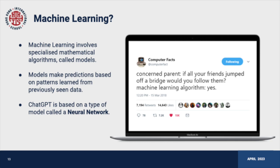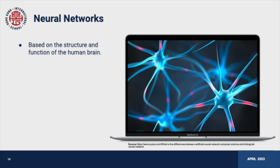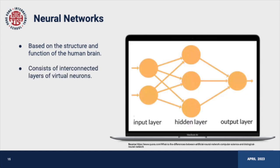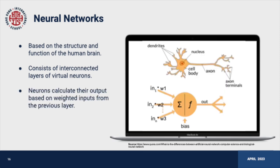Machine learning is a field of study involving specialized mathematical algorithms called models, which can be trained to recognize patterns and make predictions based on previously seen data. ChatGPT is one such model, based on a specific type called a neural network. Neural networks are a type of machine learning model inspired by the structure and function of the human brain. They consist of interconnected layers of virtual neurons that calculate a numerical output based on weighted inputs from the previous layer, with the final layer's output being the model's prediction.